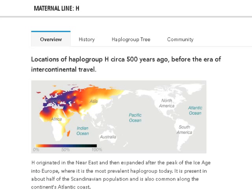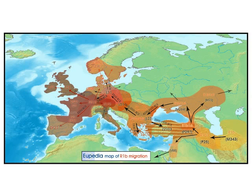Since my maternal haplogroup is a little dull, I'll focus on my paternal group. Here's a really nice map of R1b and its migration. You can see in the east, in modern-day Iran, it was R1b, and as it spread westward it becomes subgroups. In the middle of the map, in the red area near Italy in the Alps, it says U152 — that is another name for the lengthy R1b result that I got. I recommend just punching your result into Google to see what other designations your subclade might have.